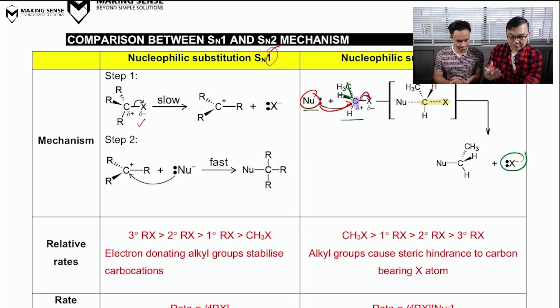So our halogenoalkane, in the presence of heat, is going to undergo a heterolytic breaking, the CX bond is going to break automatically to release me a carbocation.